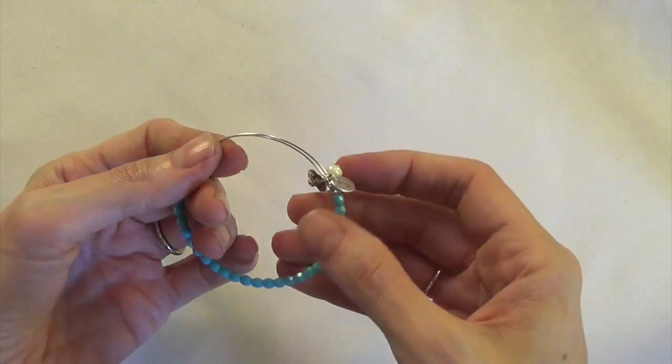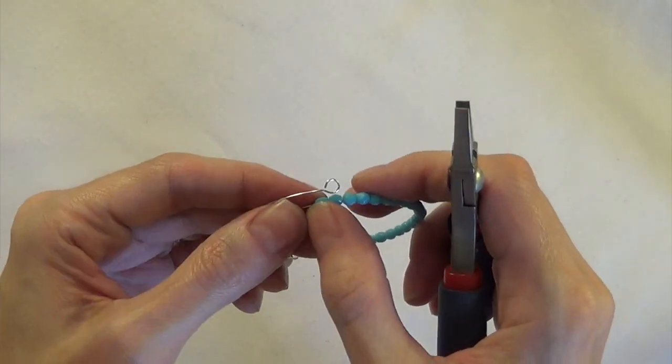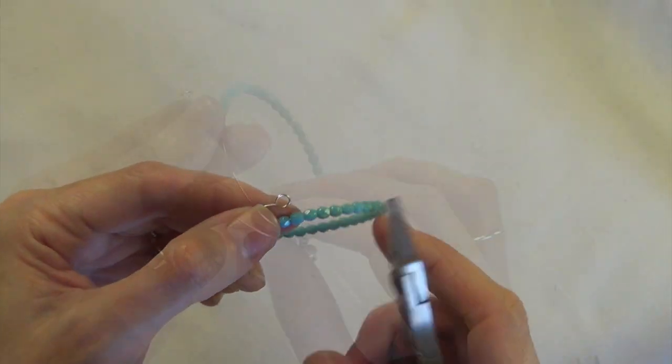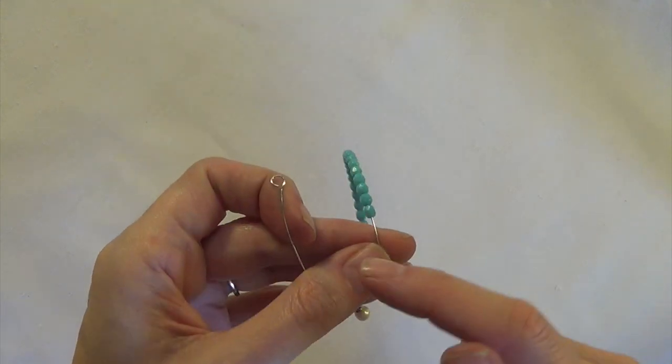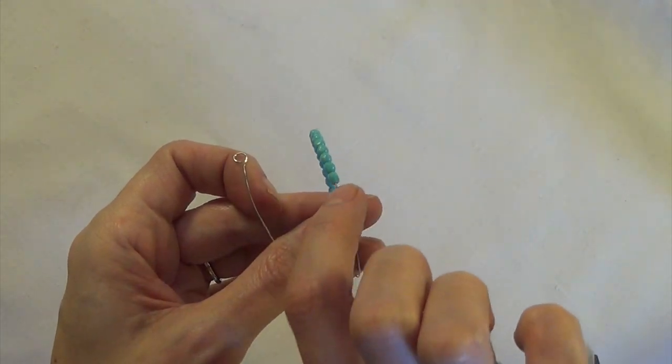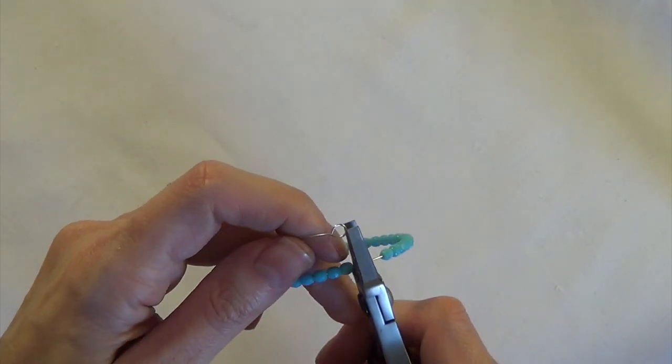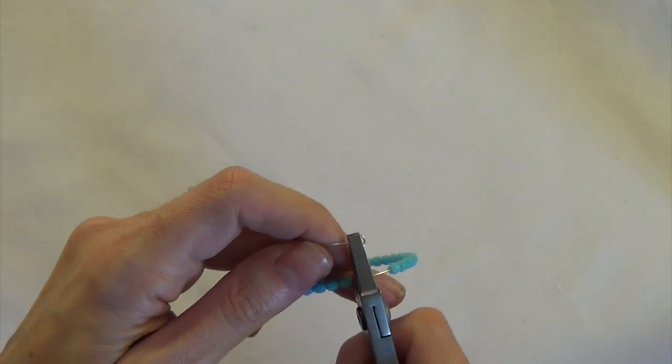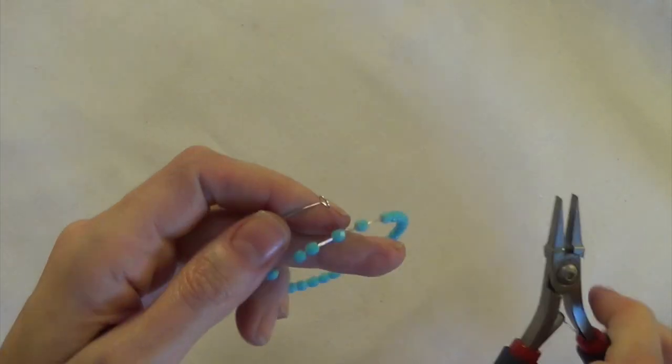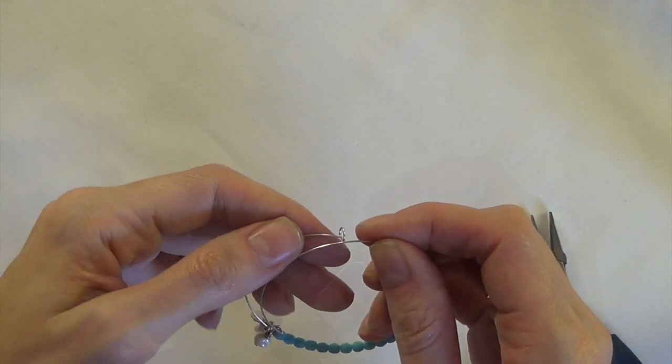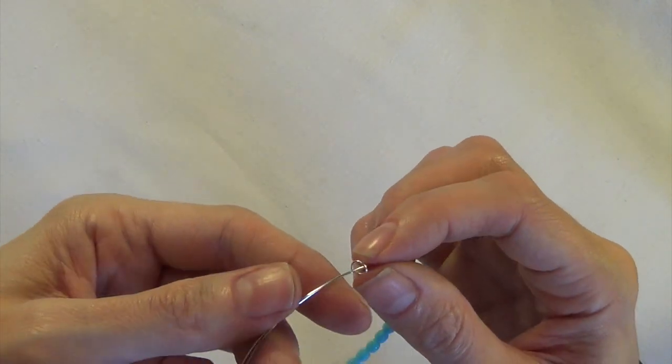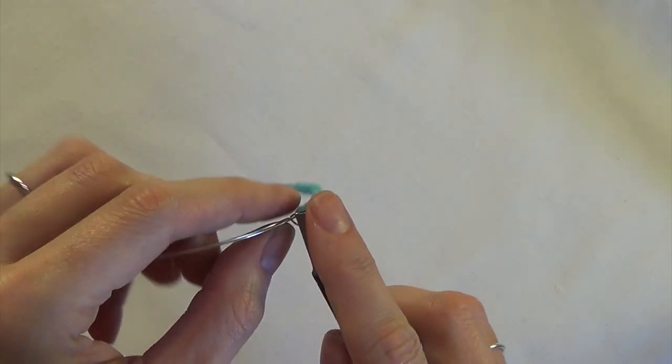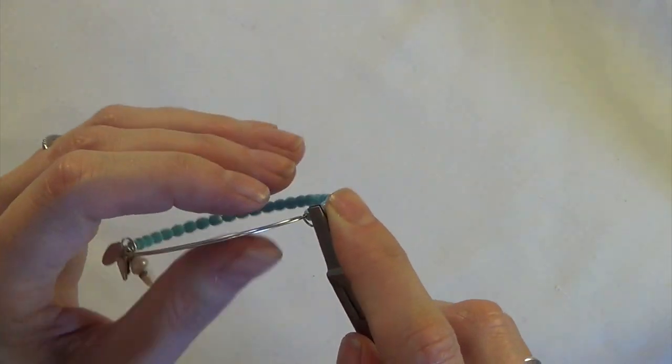Now make sure the beads are in the right spot and before we close up this loop we need to bend it. This loop is facing this way so we need this one to face this way in towards the other piece of the wire. And I'm just going to hook this other wire through the open loop there and come back and close that second loop up really well.